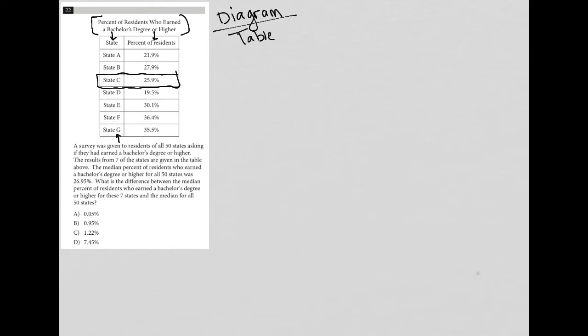The question says a survey was given to residents of all 50 states asking if they had earned a bachelor's degree or higher. The result from seven of the states are given in the table above. So we only have seven of the states out of the total of 50 states. The median percent of residents who earned a bachelor's degree or higher for all 50 states was 26.95%. Anytime I'm provided with quantitative information, I like to write it down. So median, I'll just say median parentheses 50 for the 50 states, that's equal to 26.95%.